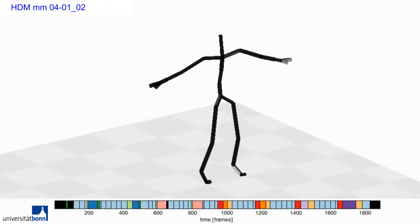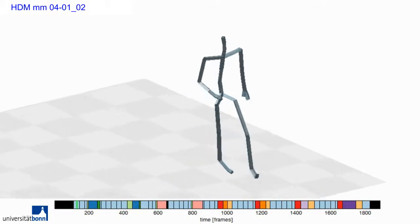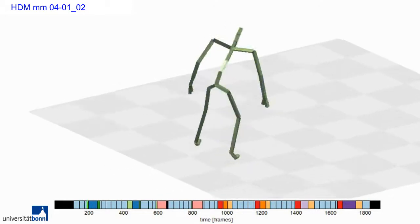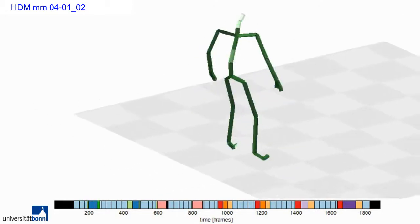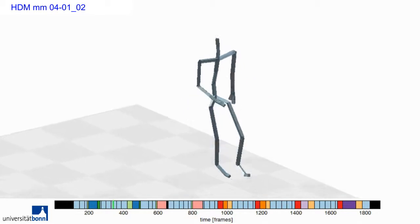This example from the HDM05 has various phases of walking in it, which are intermitted by sitting down on and getting up from various seats such as tables, chairs and the floor.